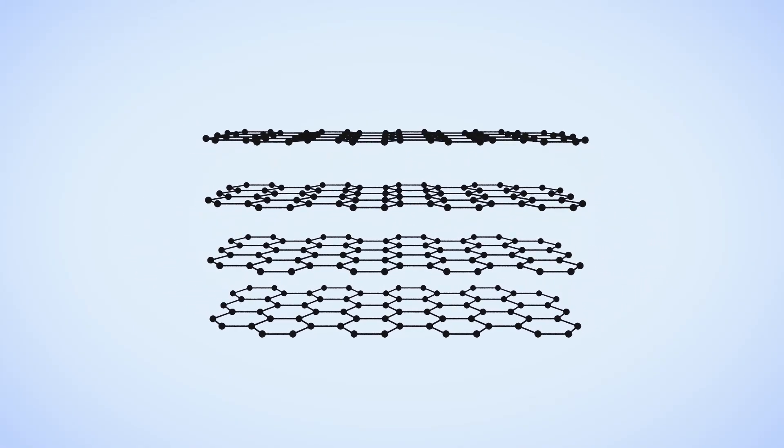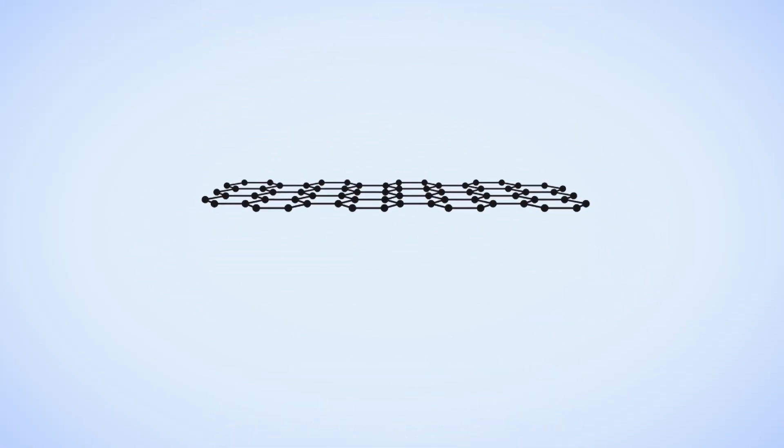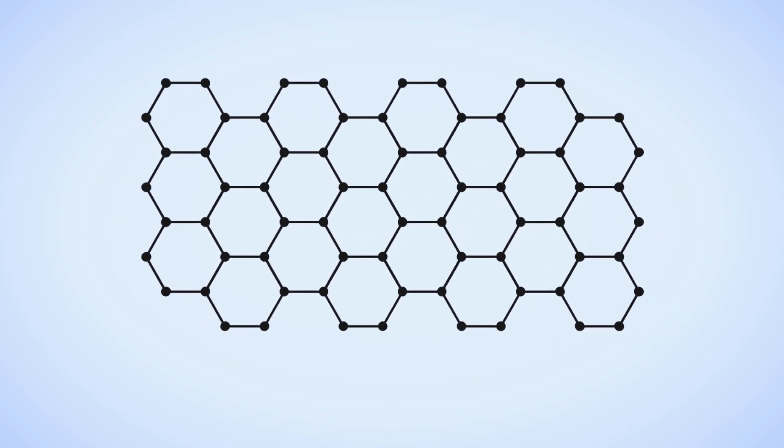Graphene, which is attracting attention as a dream nanomaterial and a new next generation material, is a single atomic layer of carbon film peeled from graphite.